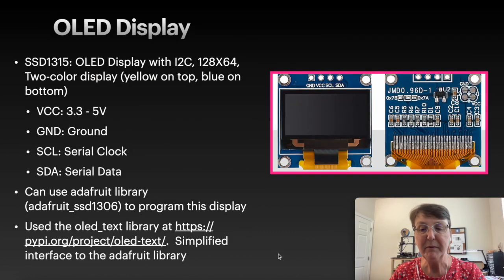So here's just a little information about the display I'm using in this project. It's SSD 1315 and it uses I2C communication. It has 128 by 64 pixels and my particular one has yellow on the top and blue on the bottom, but I've seen different variations of colors. It has four pins to connect it up: a power pin that can be 3.3 up to 5 volts, a ground, and then the two pins for the I2C communication.